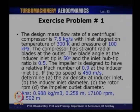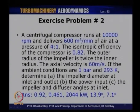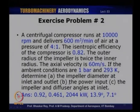Exercise problem 2: A centrifugal compressor runs at 10,000 rpm and delivers 600 m³/min of air at a pressure ratio of 4:1. Isentropic efficiency is 0.82. The outlet radius is twice the inner radius. Axial velocity is 60 m/s. Ambient conditions: 1 bar and 293 K. Determine impeller diameter at inlet (0.92 m) and outlet (0.461 m), power input (2044 kW), and impeller and diffuser angles at inlet (13.9° and 7.1°).